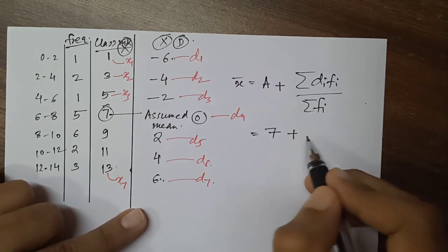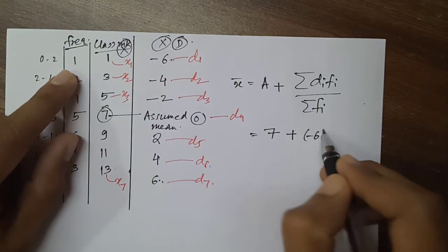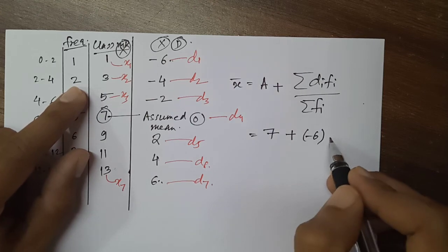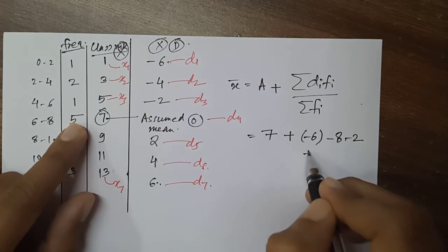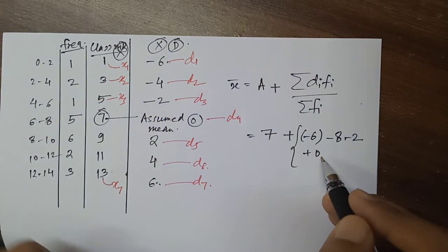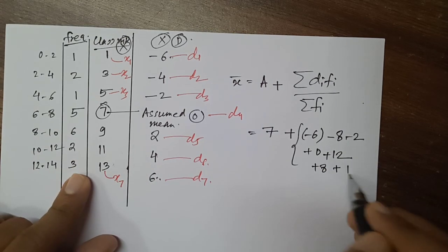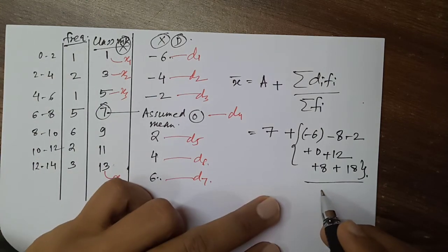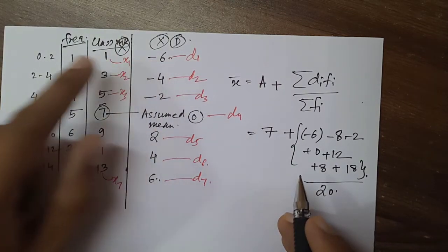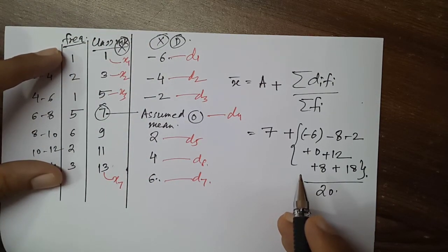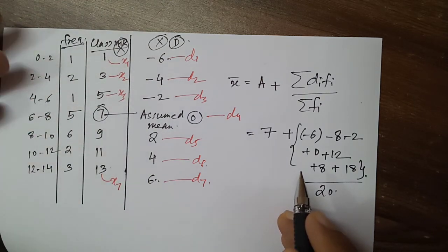Applying the formula with assumed mean a = 7: the di·fi terms are: −6×1 = −6, plus −4×2 = −8, plus −2×1 = −2, plus 0×5 = 0, plus 2×6 = 12, plus 4×2 = 8, plus 6×3 = 18. Divided by summation fi = 20. When data is complicated, you can factor out common values — for example, 6 is common in some terms — making calculations easier. One term is always 0, so grouping pairs speeds up computation.